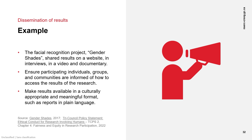Dissemination can take many forms. In the case of the project on facial recognition systems, called Gender Shades, the researchers shared their results on the project's webpage, in interviews, in a video and a documentary. The affected companies quickly responded to their technology's shortcomings and worked to improve them. As per the Tri-Council Policy Statement on the Ethical Conduct for Research Involving Humans, researchers should ensure that participating individuals, groups and communities are informed of how to access the results of the research. Results should be made available in a culturally appropriate and meaningful format, such as reports in plain language. Inclusive approaches lead to universal benefits and broaden research impact.